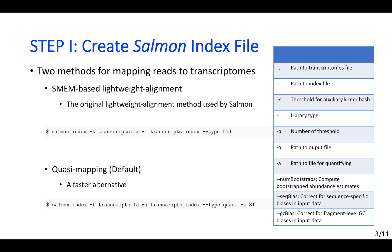Here are the details about the command for creating a Salmon index file. We simply use the salmon index command to make it work. Salmon can perform two methods for mapping reads to transcriptomes. The default method is the quasi-mapping method, which is the newer and faster alternative. If you prefer the original method of light-weighted alignment, you could simply change the command type from quasi to fmd.